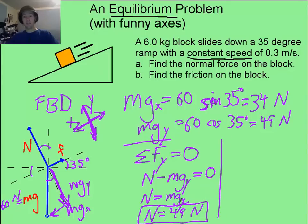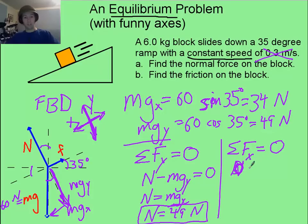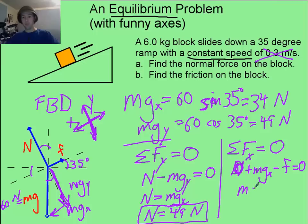For friction, it's just as easy. Because there's no acceleration — constant speed — for the x direction we say: mg sub x minus friction equals zero, or mg sub x equals friction. So friction must equal 34 Newtons.